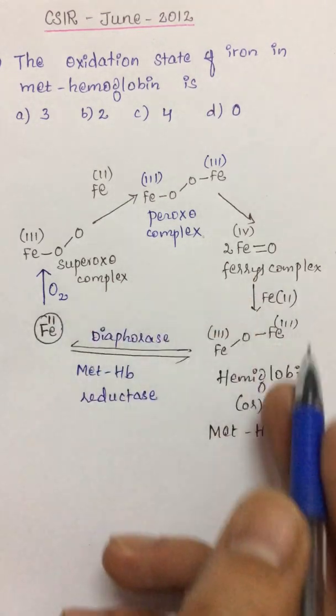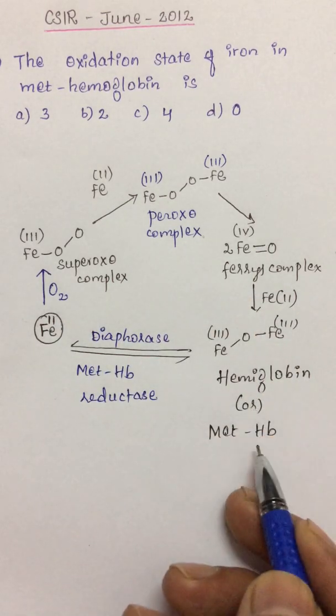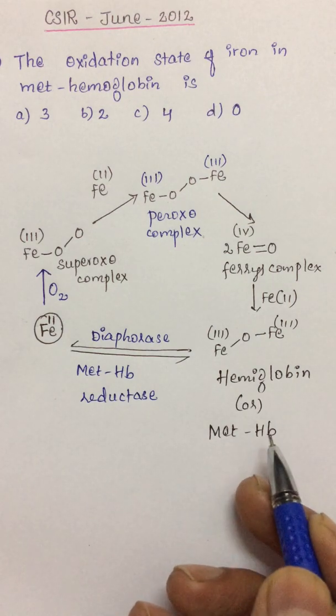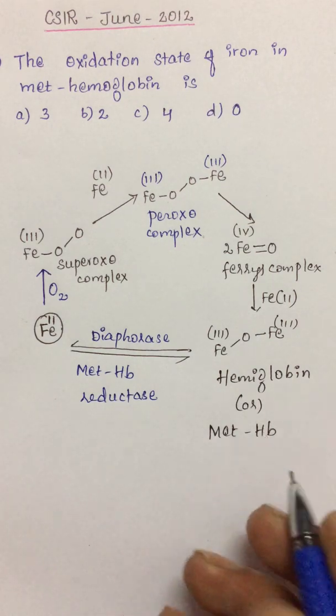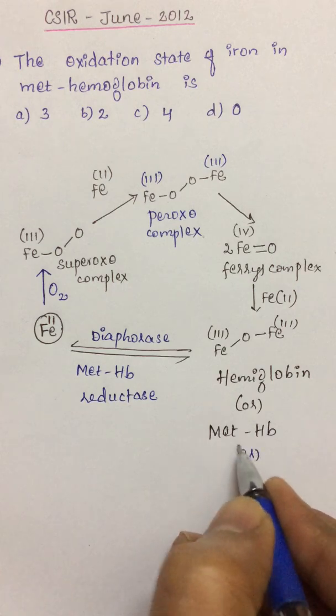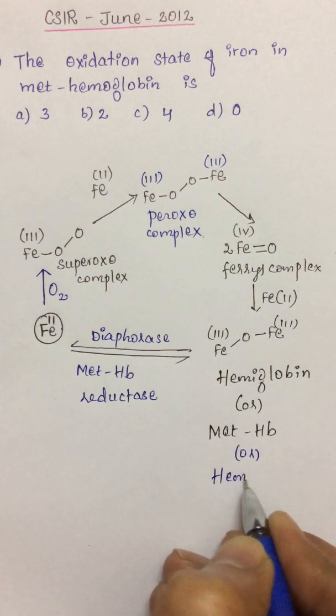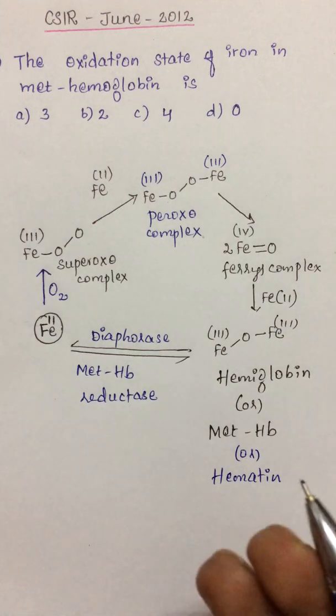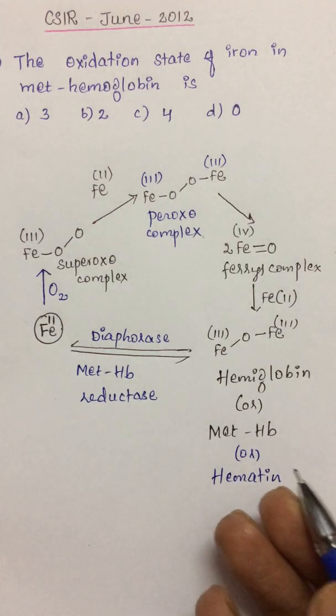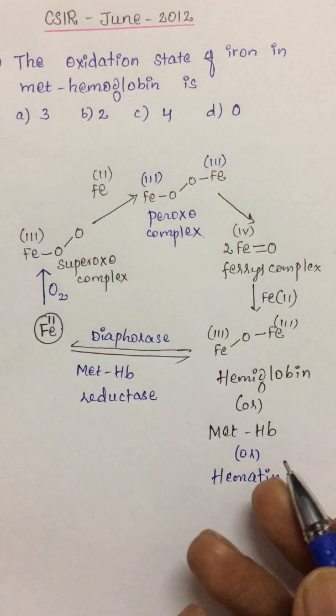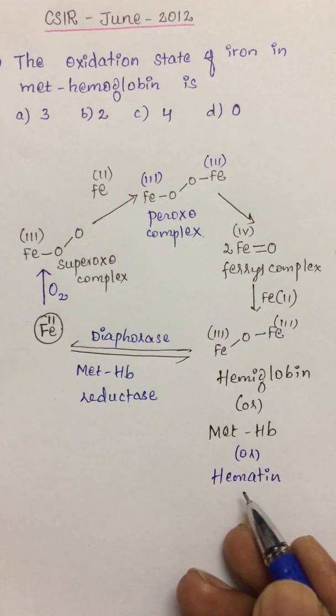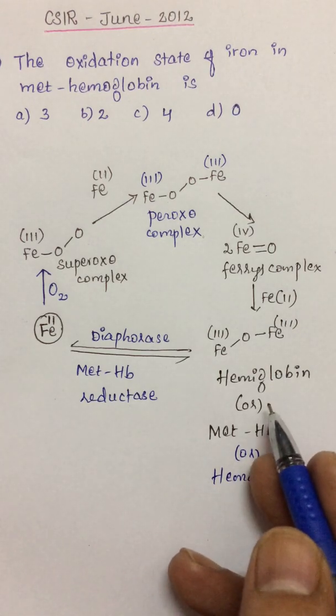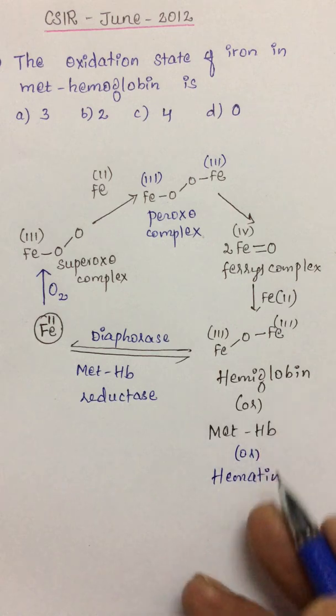So this is a cycle where we can see the formation of hemiglobin or methemoglobin. There is also another name for hemiglobin or methemoglobin - it is called hematin. So it has three different names. Suppose in any exam, if at all they ask what is the oxidation state of methemoglobin, or they may change it as what is the oxidation state of iron in hematin or hemiglobin, it is just one and the same.